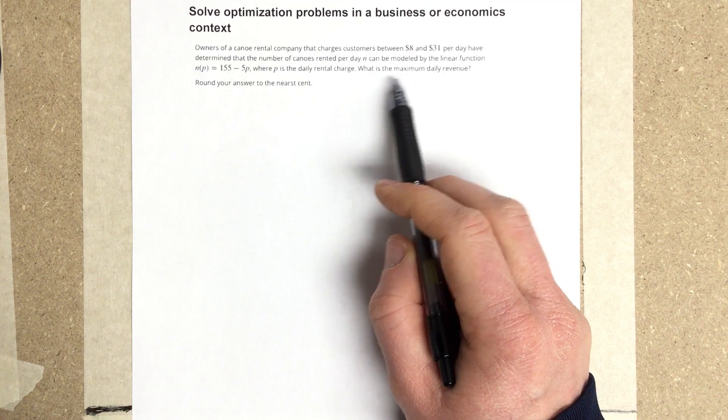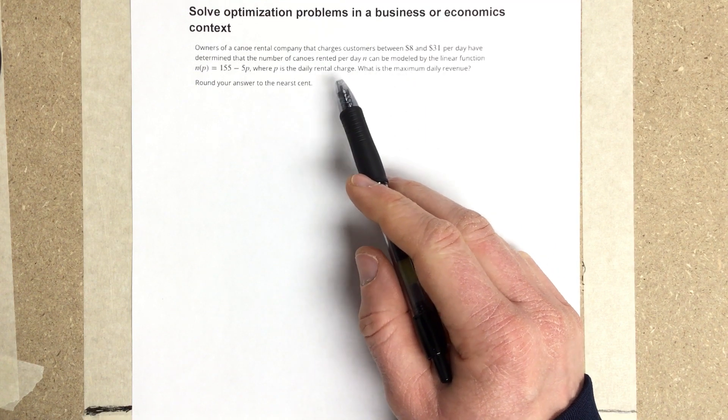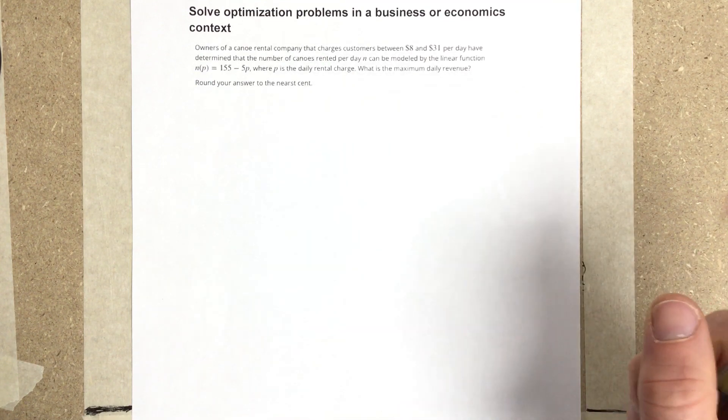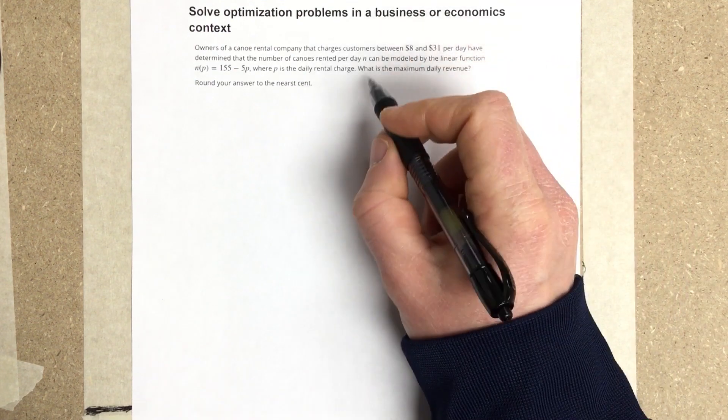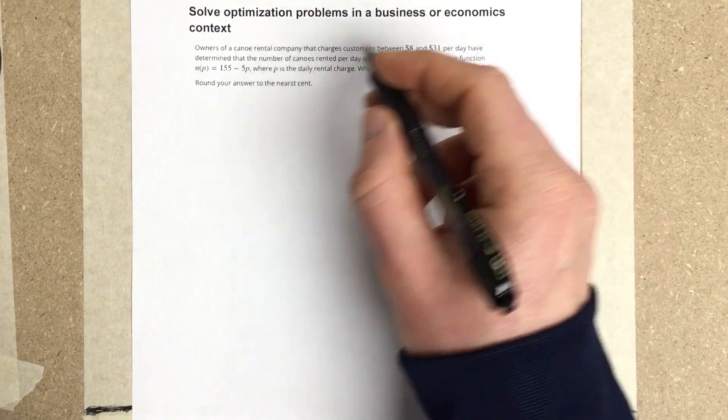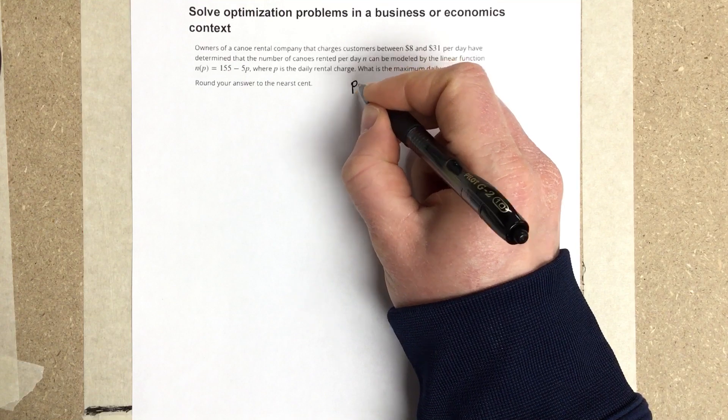What is the maximum daily revenue? Round your answer to the nearest cent. So we know that they're going to charge, so P is the daily rental charge.